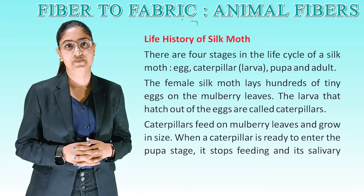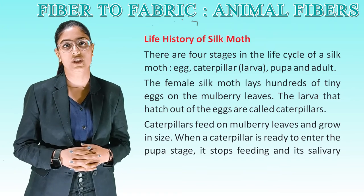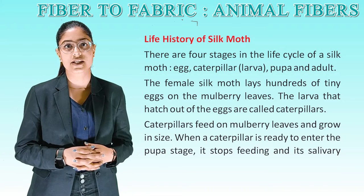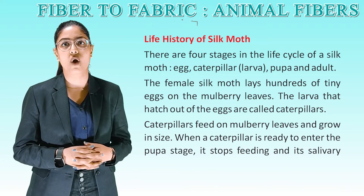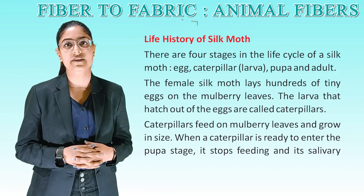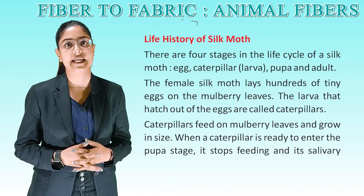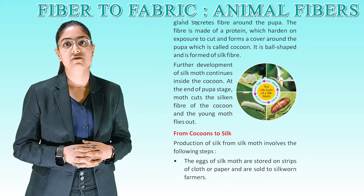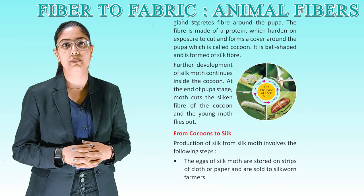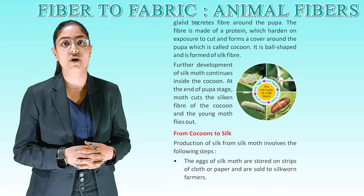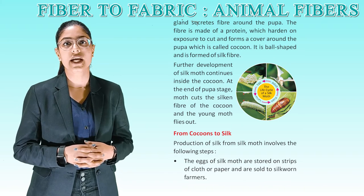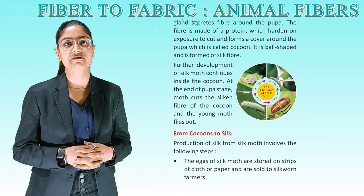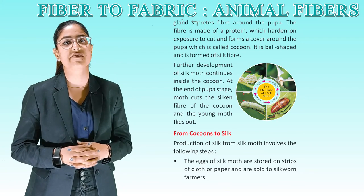Life history of silk moth: there are four stages in the life cycle of a silk moth — egg, caterpillar (larva), pupa, and adult. The female silk moth lays hundreds of tiny eggs on mulberry leaves. The larvae that hatch from the eggs are called caterpillars. Caterpillars feed on mulberry leaves and grow in size. When a caterpillar is ready to enter the pupa stage, it stops feeding and its salivary glands secrete fiber around the pupa. The fiber is made of protein which hardens on exposure to air, forming a cover around the pupa called a cocoon. It is ball-shaped and formed of silk fiber. Further development of the silk moth continues inside the cocoon. At the end of the pupa stage, the moth cuts the silken fiber of the cocoon and the young moth flies out. See this diagram showing the life cycle of a silk moth.